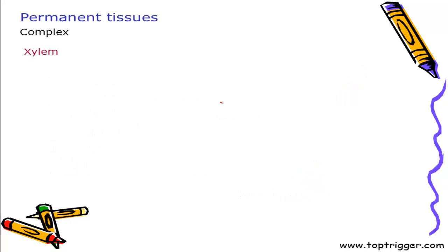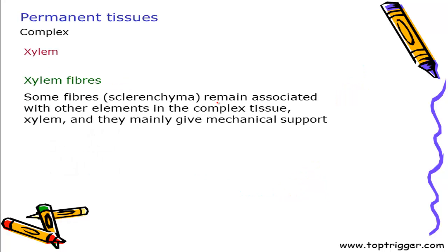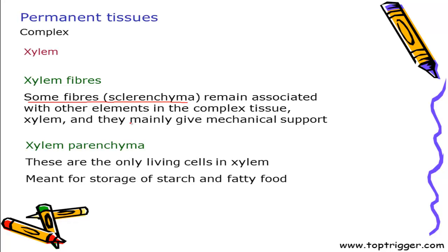Xylem fibers are dead tissue and are primarily meant for mechanical support. Xylem parenchyma is the only living cell within the xylem and is meant for storage of starch and fatty foods. This is all about xylem.